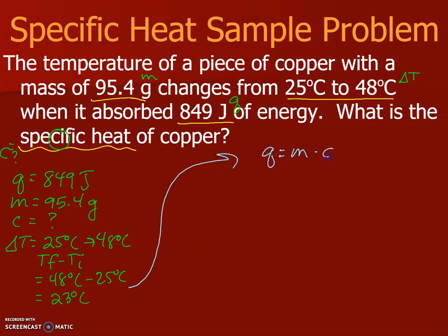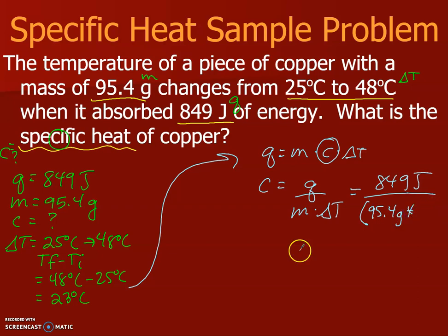Now with that information, I'm going to use my q equals mcΔT equation. Since I'm solving for c, I'm going to use the equation that's already rearranged to c equals q over mΔT. And I plug in my 849 joules over, and then be very careful here, 95.4 grams times, I'm taking my change, 23 degrees Celsius.